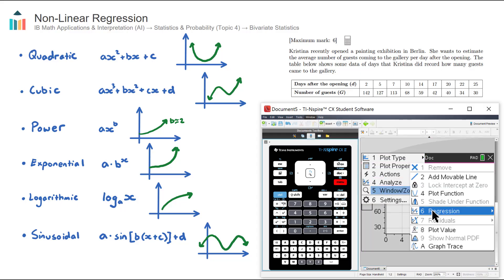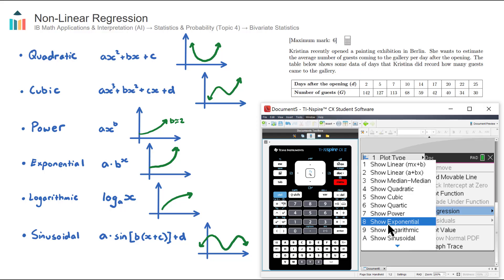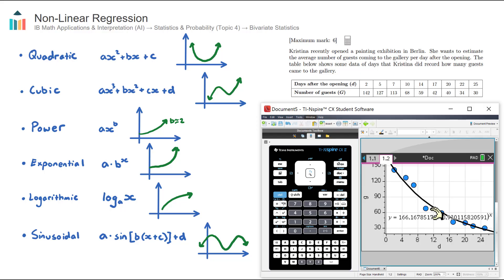So we can go menu, number four, analyze, number six, regression, and I'm going to try an exponential. There we go, that looks pretty good. And there's the equation of that exponential model. They do keep quite a few decimal places, but it's 166 times 0.93 to the power of x.